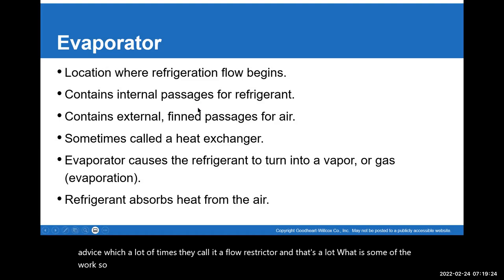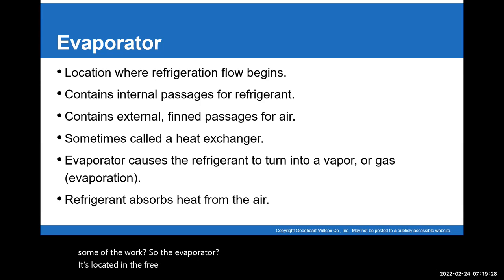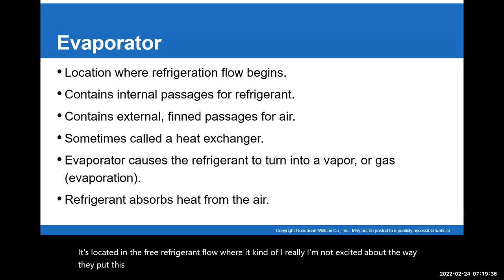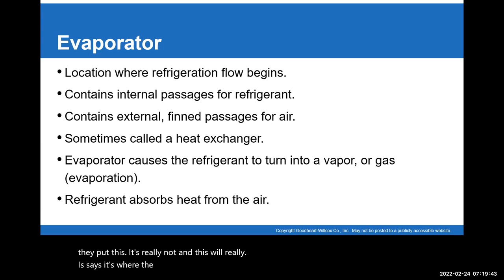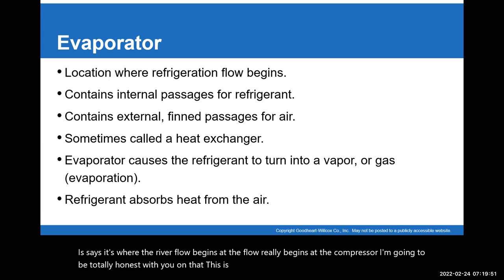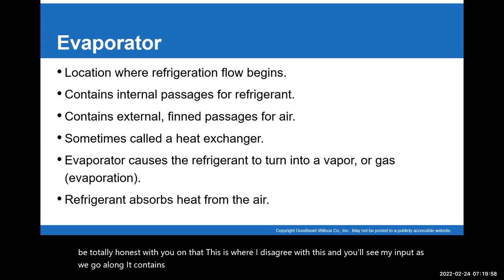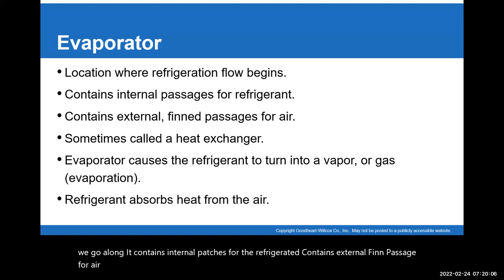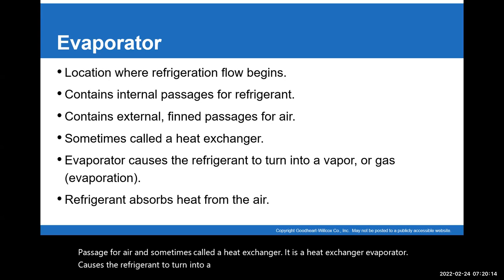The evaporator is located in the refrigerant flow. I disagree with how this PowerPoint describes the starting point — it says the flow begins at the evaporator, but the flow really begins at the compressor. The evaporator contains internal passages for the refrigerant and external fin passages for air. It's sometimes called a heat exchanger — and it is a heat exchanger. The evaporator causes the refrigerant to turn into a vapor or gas.